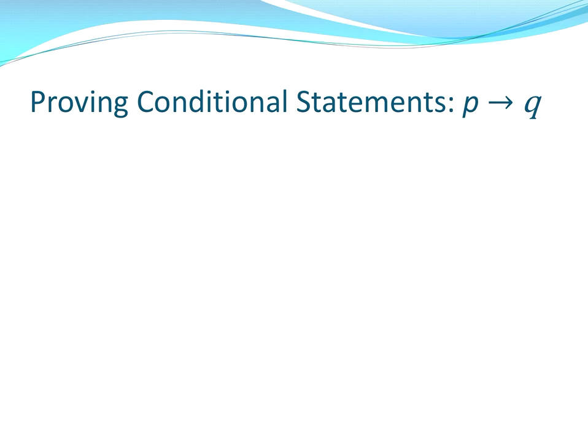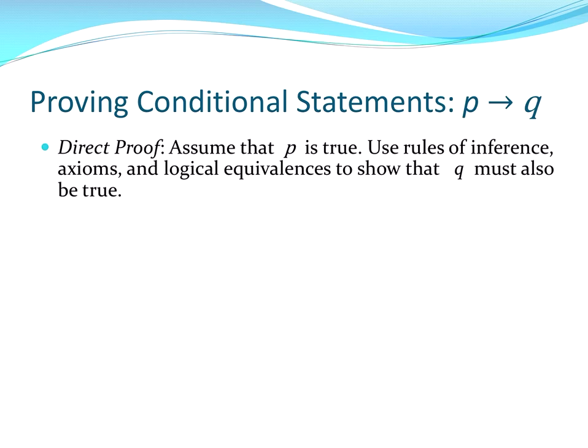All right, here we go with a direct proof of p implies q. In order to do a direct proof, we assume that p is true, and then we show that q must also be true. Okay? So we will assume the hypothesis and show that the consequence must be true.